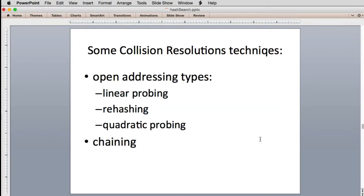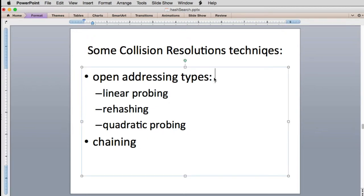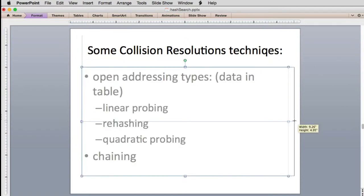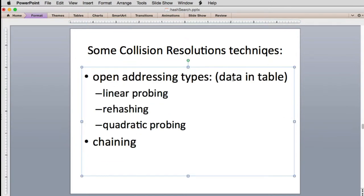So here's the techniques we're going to cover. Three of the techniques come under one category called open addressing. The thing about open addressing is they keep the data in the table. So when you do open addressing, the data is kept directly in the table. And there are three versions of that: linear probing, rehashing, and quadratic probing.